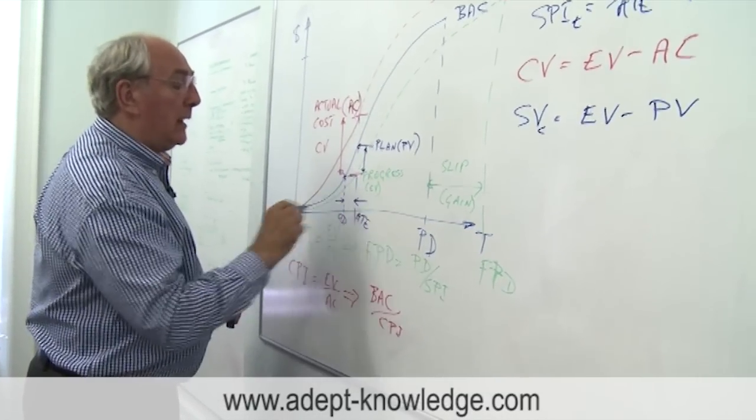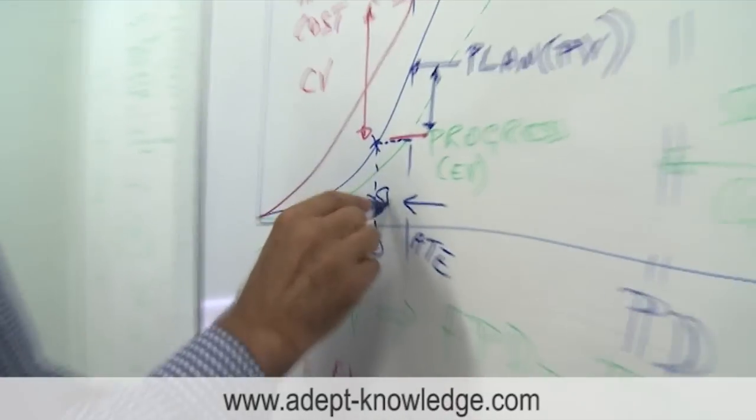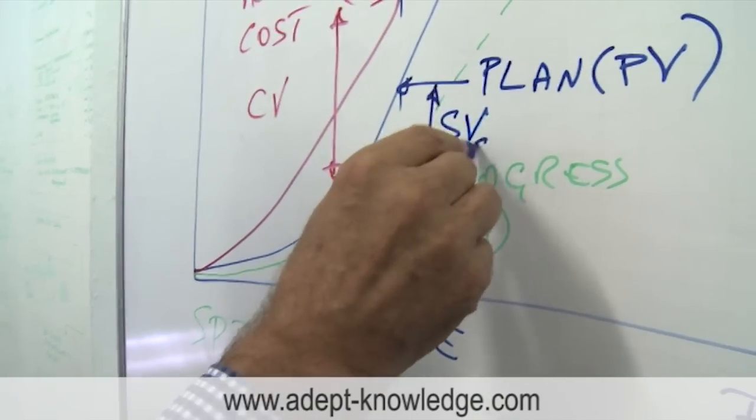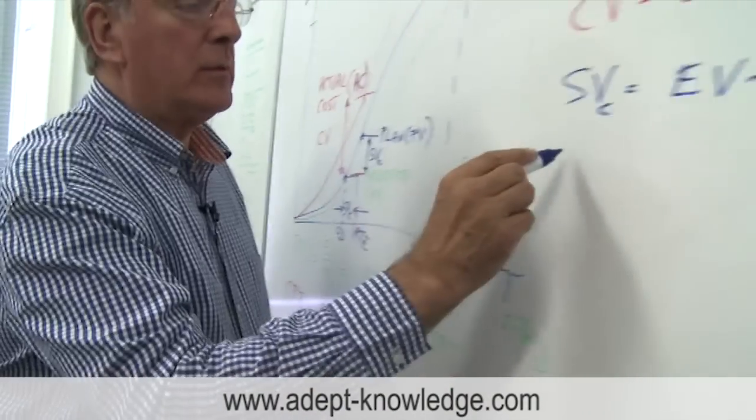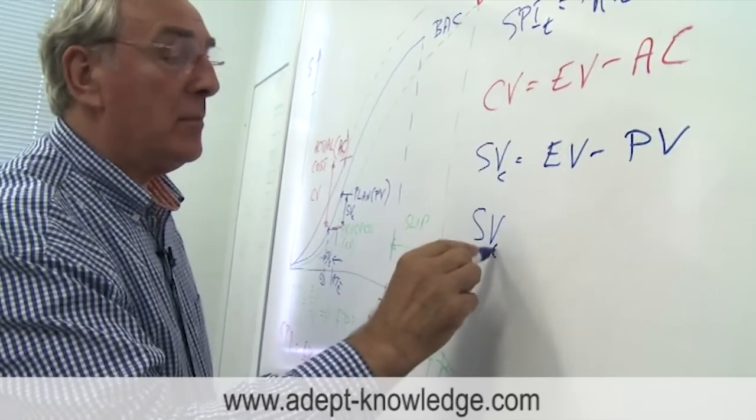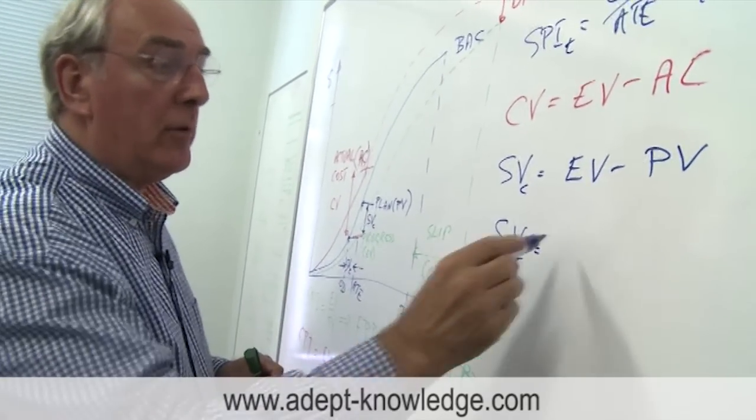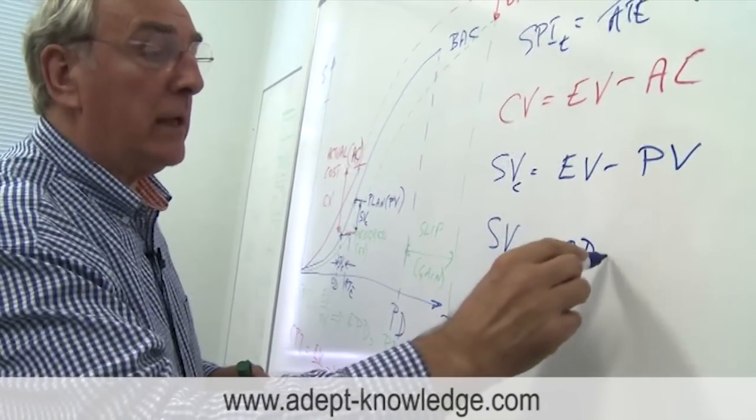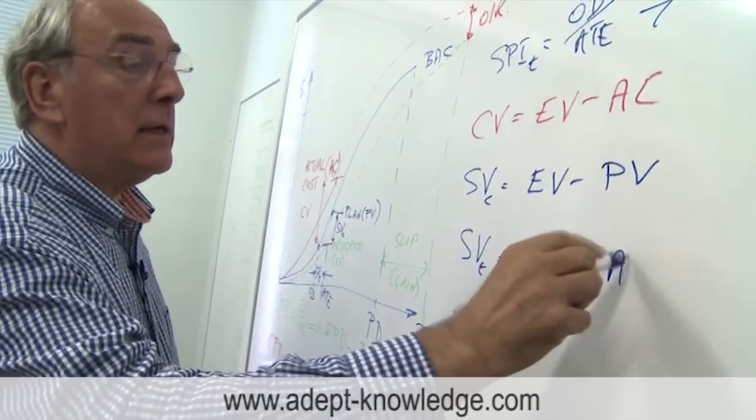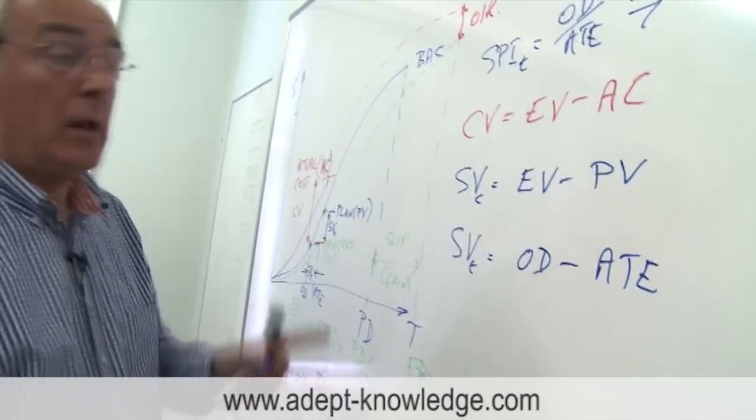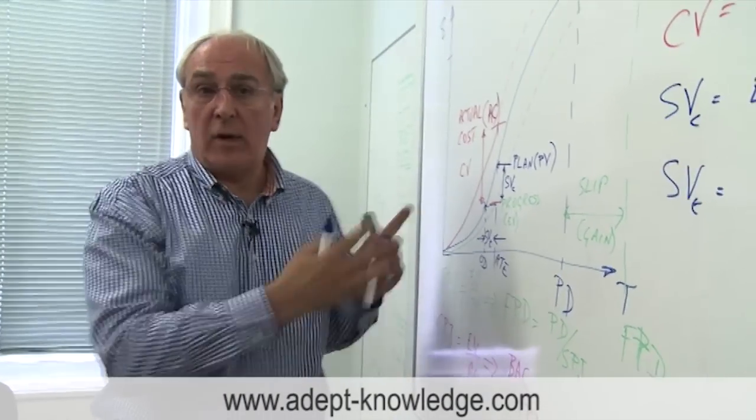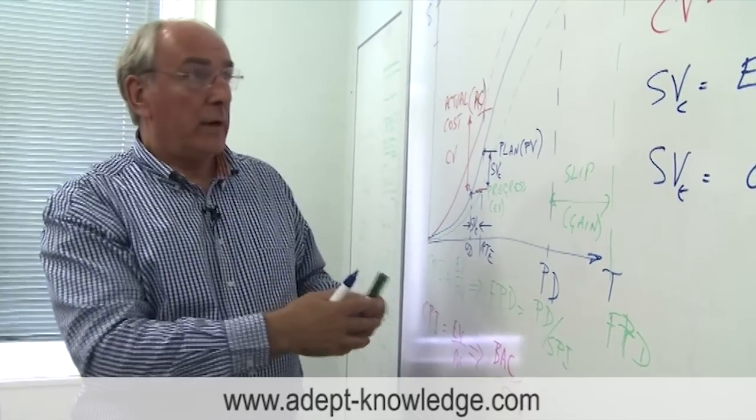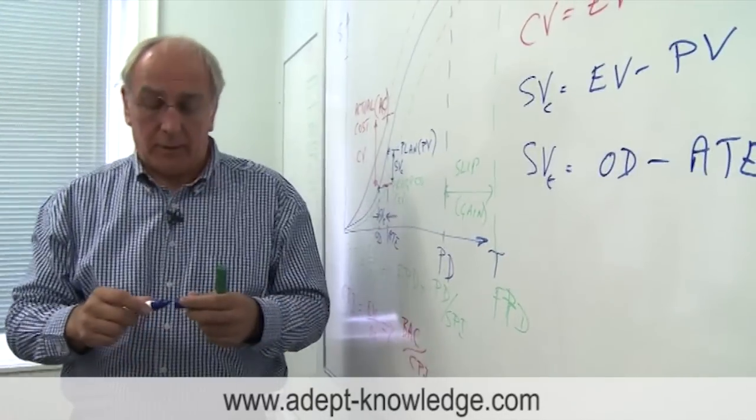The other thing we would want to look at is this schedule variance on time. That one there was the schedule variance on cost, this schedule variance on time is going to be simply this one here, schedule variance time. Now the parameters going into there are the original duration OD minus this ATE, the actual expended time. That's going to be a negative number in this setup because this project is running late. It's a complete disaster here, running late and also running above cost.